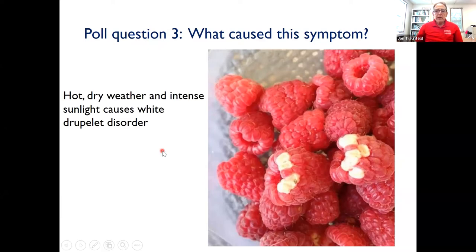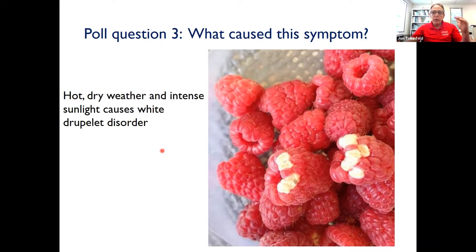The answer to poll three is actually hot weather and high solar incidence — intense sunlight. We're seeing more of this. Raspberry is really being pushed in a lot of parts of the state. This issue is called white droplet disorder. We are seeing it more, and you'll see it more in raspberry than in blackberry. There's really nothing you can do about it. Some people may find they can actually use those fruits, but the individual droplets get hard and dry. This is another climate change-influenced disorder.